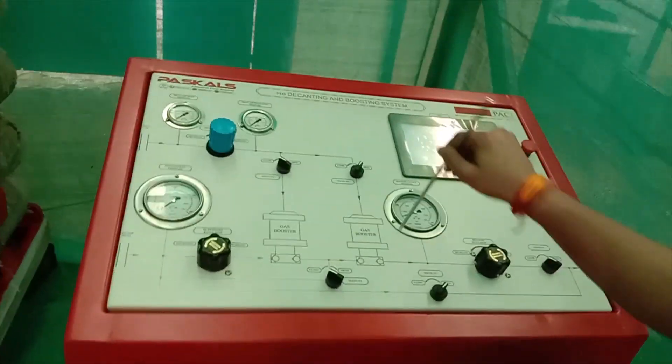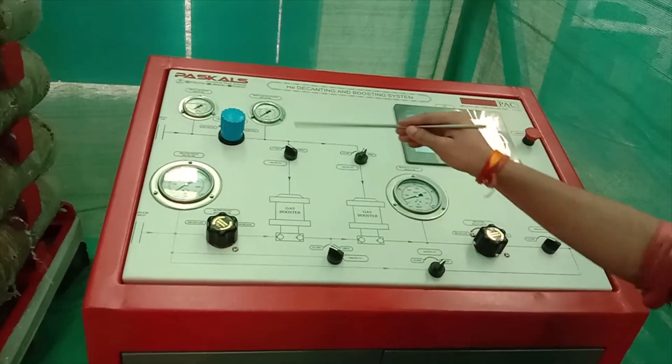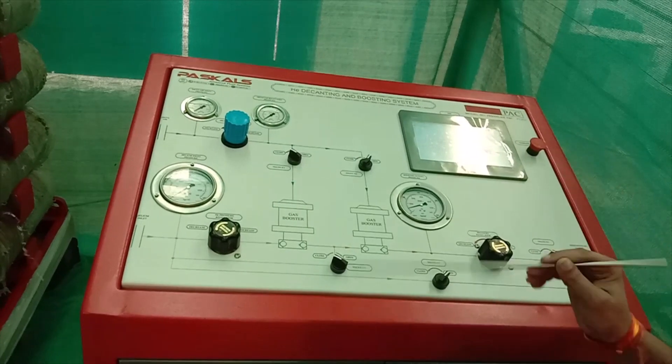If you see over here, these are the selectors which are given over here - the black ones, one, two, three, four, five. These are given for the auto and the manual modes.